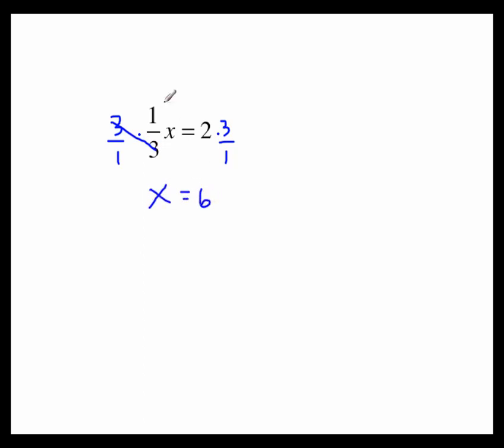In this next example, we have a fraction coefficient that's not 1 over something. So the idea of multiplying by the reciprocal will be helpful to us. The reciprocal of 2 fifths is the fraction 5 over 2. As long as I multiply this side by 5 over 2, I'm going to be able to solve this equation. Over here, 5 cancels with 5. 2 cancels with 2.